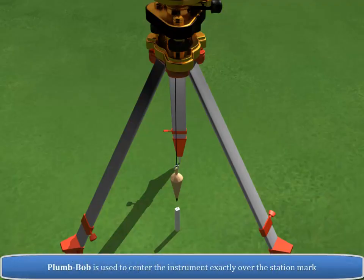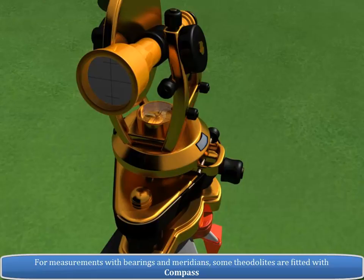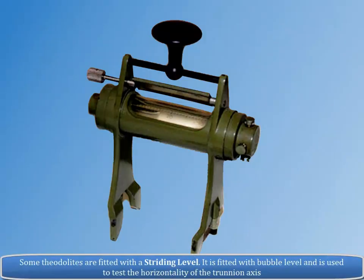Plumb bob is used to center the instrument exactly over the station mark. For measurements with bearings and meridians, some Theodolites are fitted with compass. Some Theodolites are fitted with a striding level. It is fitted with bubble level and is used to test the horizontality of the trunnion axis.